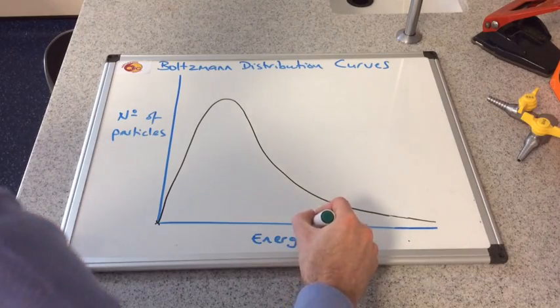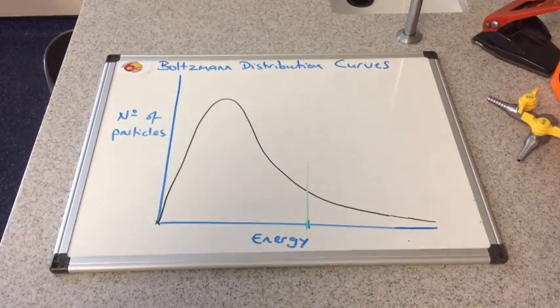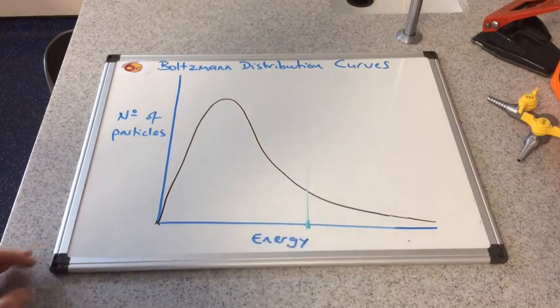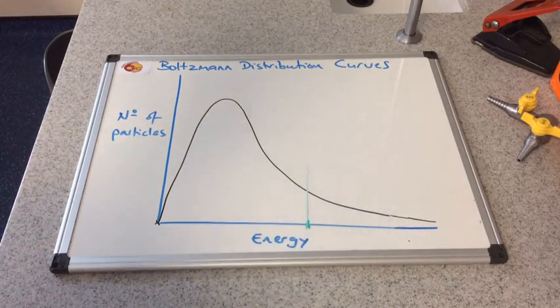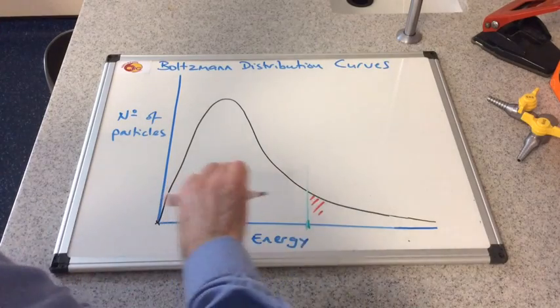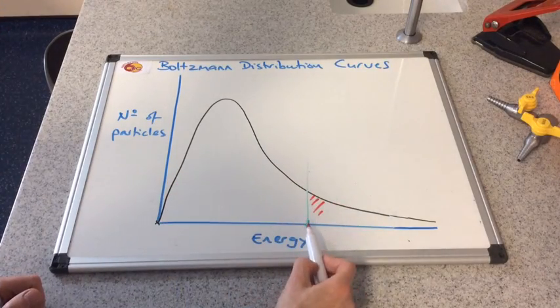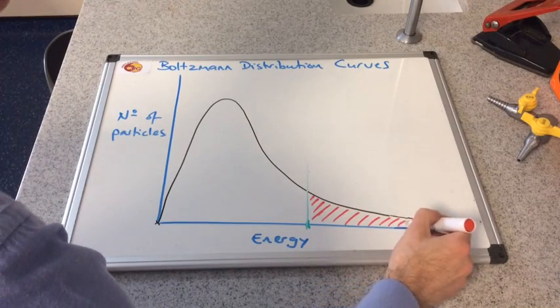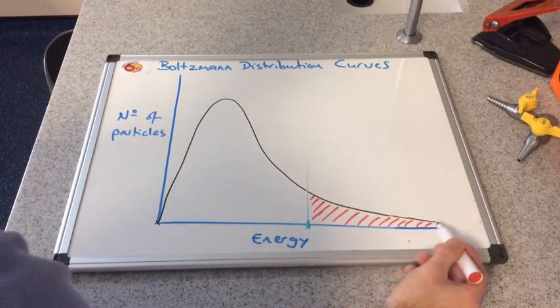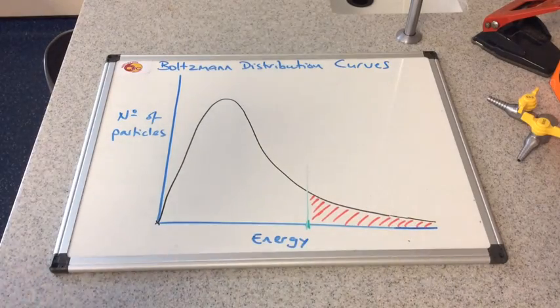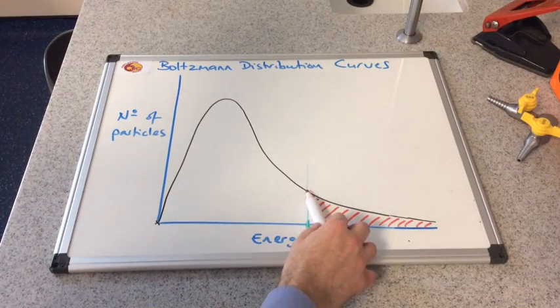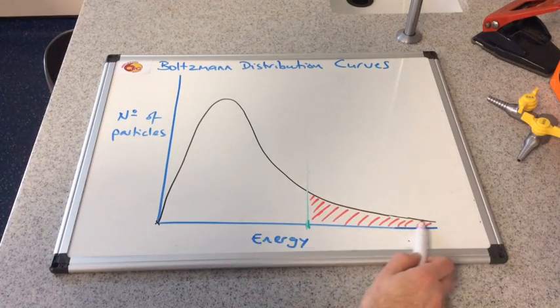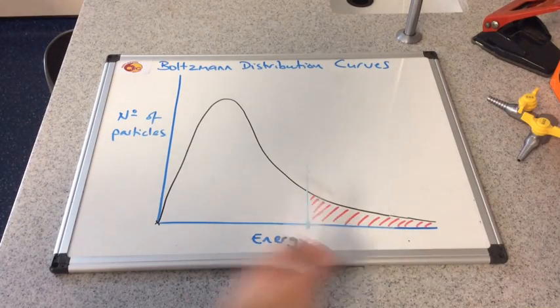So what we can do is if we extend the activation energy up so it cuts the curve, we can see now that this area under the curve after the activation energy—so higher than the activation energy—this area here is telling us the number of particles. Remember the area under the curve is the number of particles. So the area under the curve after the activation energy, these are all particles that can react successfully.